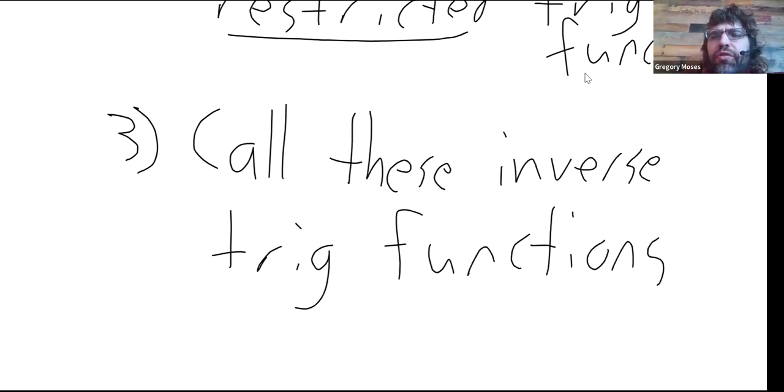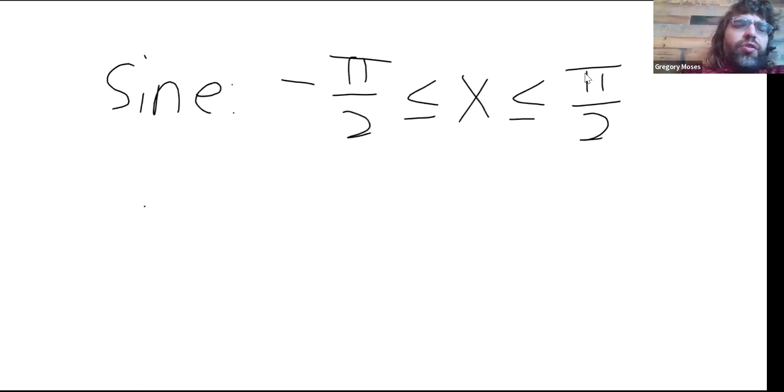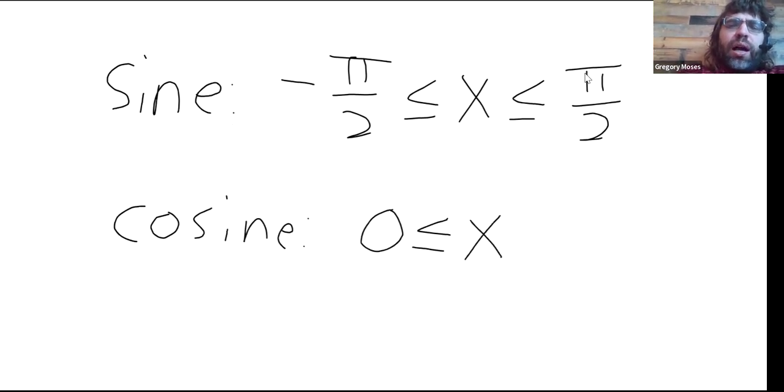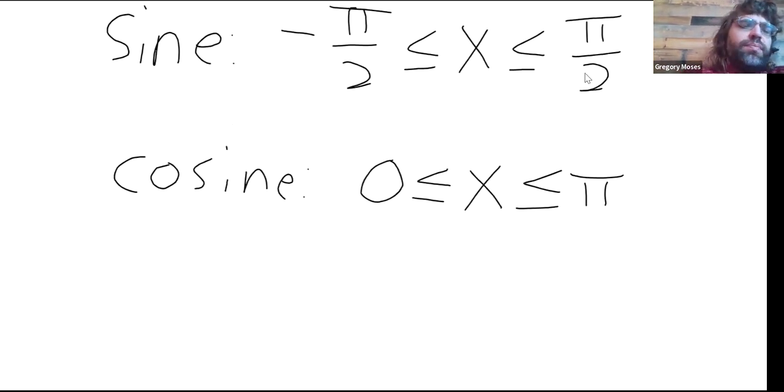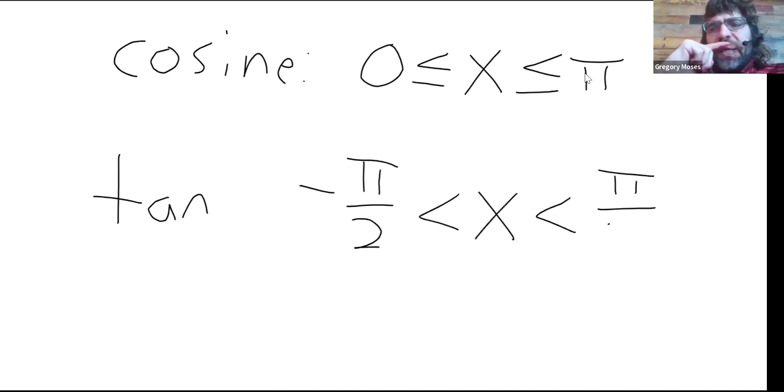And I gave the restrictions on Desmos, but let me also write these down for you. The restriction on the sine is between negative pi over two and positive pi over two, including those endpoints. For the cosine, it was between zero and pi, again, including the endpoints. For the tangent, it's similar to the sine, but not including the endpoints.